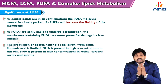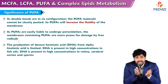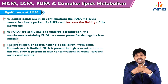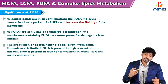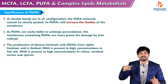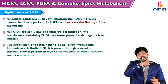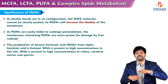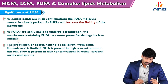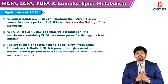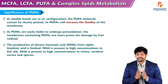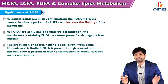As PUFAs are easily liable to undergo peroxidation, membranes containing PUFA are more prone to damage by free radicals. They are the first targets for free radicals to get damaged, and this is a chain reaction — if one polyunsaturated fatty acid is affected by a free radical, the other PUFAs present in the membrane are also affected. The production of DHA from alpha-linolenic acid is limited, and DHA is present in high concentrations in fish oils, retina, cerebral cortex, and sperms.